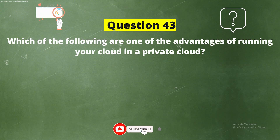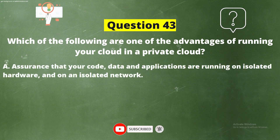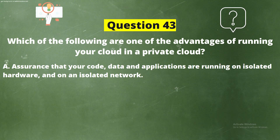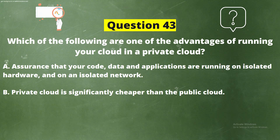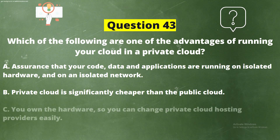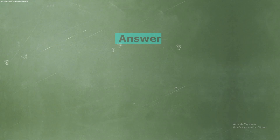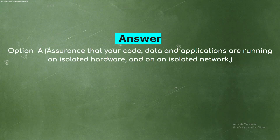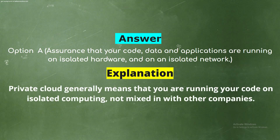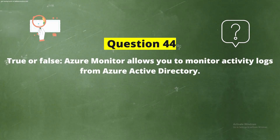Question 43: Which of the following is one of the advantages of running your cloud in a private cloud? Options: Option A, assurance that your code, data, and applications are running on isolated hardware and an isolated network; Option B, private cloud is significantly cheaper than the public cloud; Option C, you own the hardware so you can change private cloud hosting providers easily. The correct answer is Option A. Explanation: private cloud generally means you are running your code on isolated computing, not mixed in with other companies.